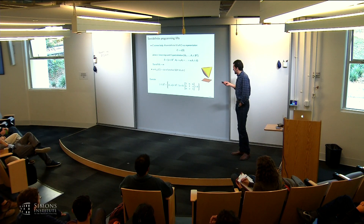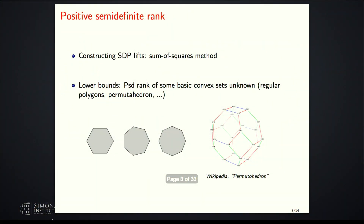How do we actually construct SDP lifts? We have a general method based on the sum of squares approach: you try to certify all the valid linear inequalities of your convex set using sums of squares from a certain low-dimensional subspace, which gives a certain SDP lift. What I'll be interested in here is proving optimality of certain lifts — that is, proving lower bounds on the PSD rank.